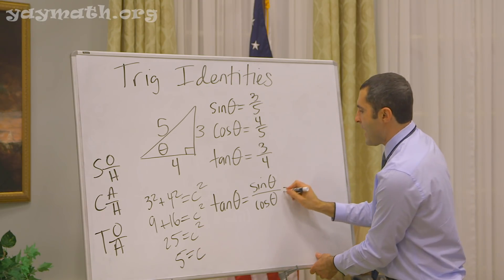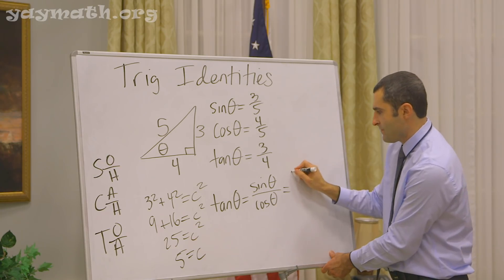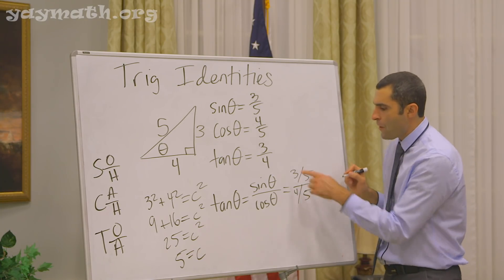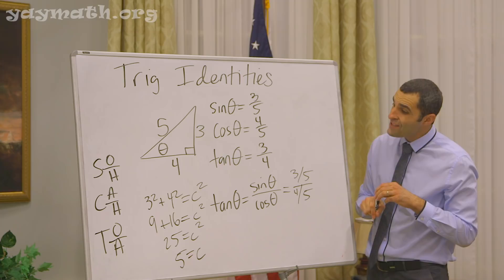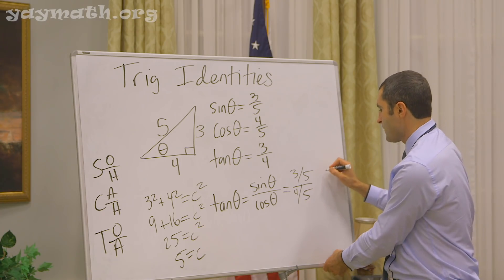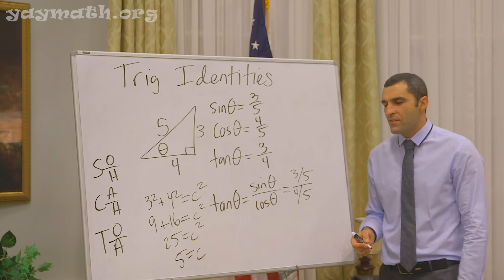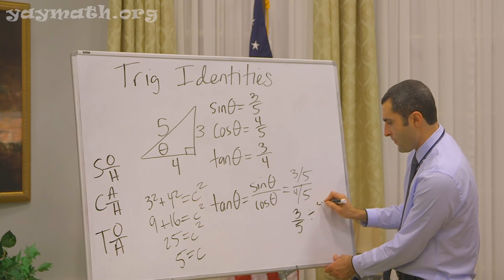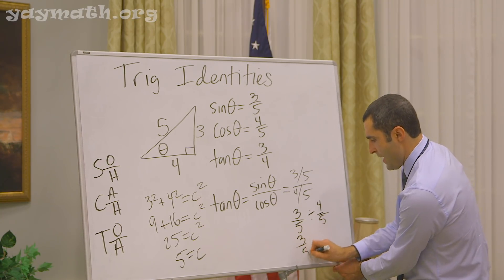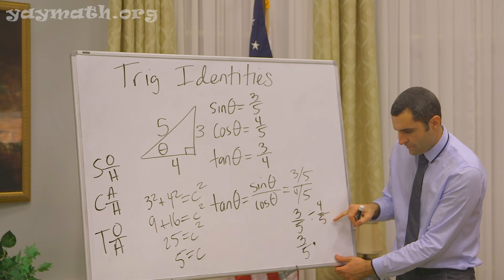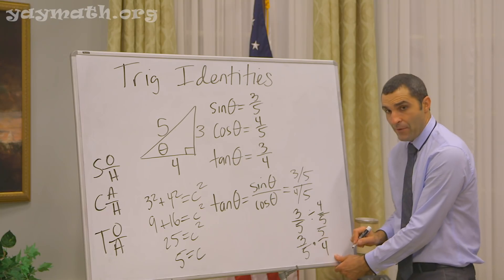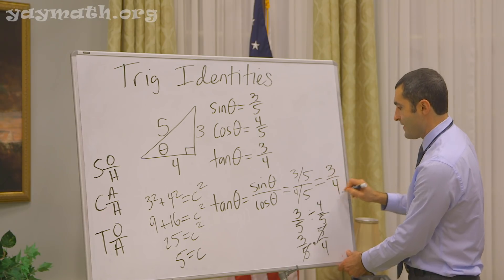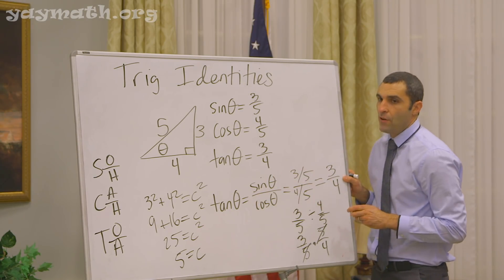Observe. Sine of the angle is 3 over 5. Cosine of the angle is 4 over 5. Now, 3 over 5 divided by 4 over 5 — some people like to see it as 3 over 5 times 5 over 4. We cancel out the 5s and multiply across. This becomes 3 over 4. So tangent is 3 over 4, which you could say is sine over cosine.